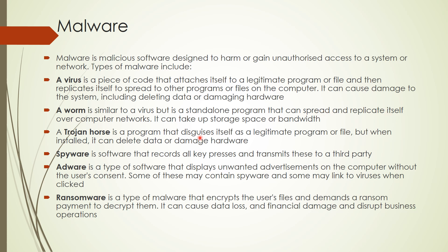Just like a real worm — if you cut a worm, both parts of its body can survive. We got the idea of a computer worm from that — it self-replicates. A trojan horse is a program that appears to be a legitimate program, but when installed it can delete data or damage hardware. Spyware is software that records all key presses and transmits these to a third party — it's basically a spy sitting in your system recording confidential information like your CNIC, phone number, or personal information and sharing it without your consent.